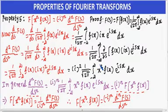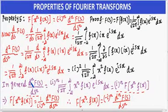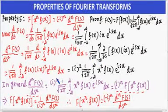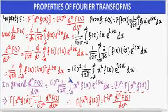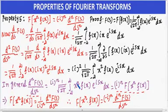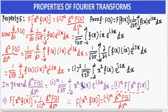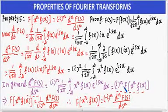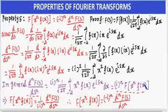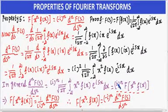In general, if 2 is replaced by n, the nth differentiation of F(s) is written as d^n F(s) / ds^n = i^n · (1/√(2π)) · ∫ from -∞ to +∞ of x^n · f(x) · e^(isx) dx. The remaining integral is recognizable as the Fourier transform formula, where the function is x^n · f(x). So this equals i^n · F{x^n · f(x)}.